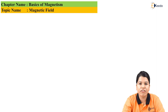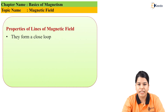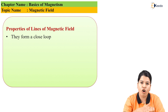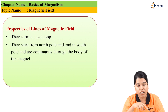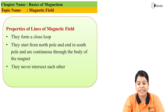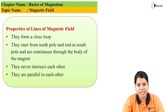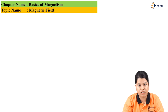The magnetic lines of forces possess certain properties: they travel from the north pole to the south pole; they are continuous around the poles of the magnet; they are parallel to each other; they do not intersect each other; and they form a closed loop.